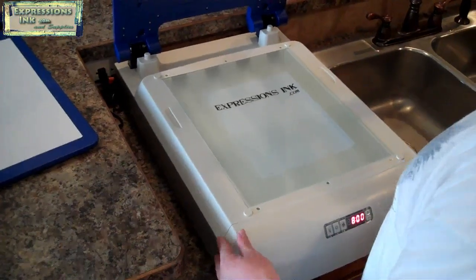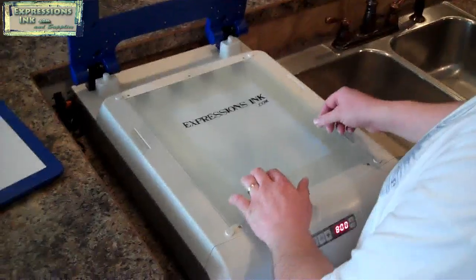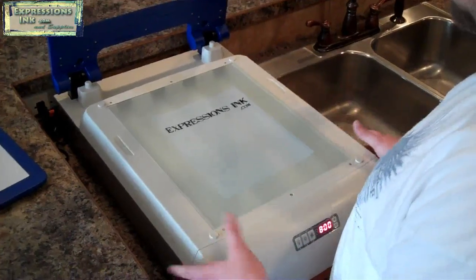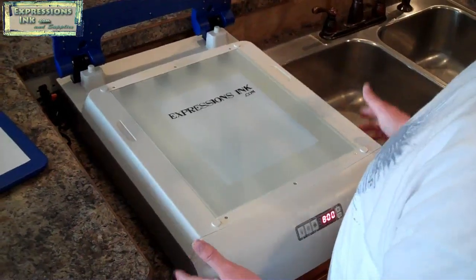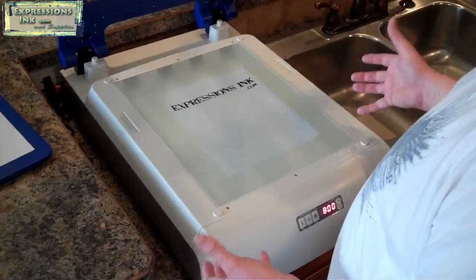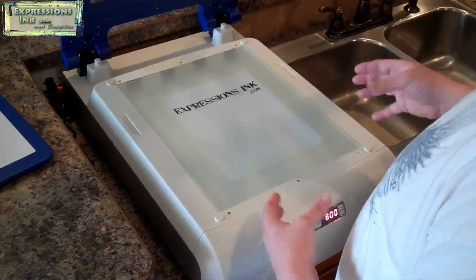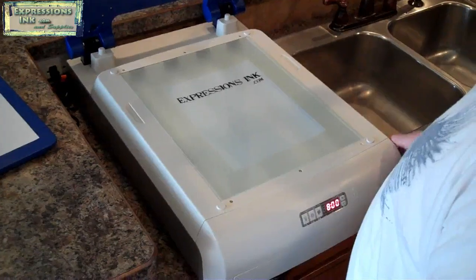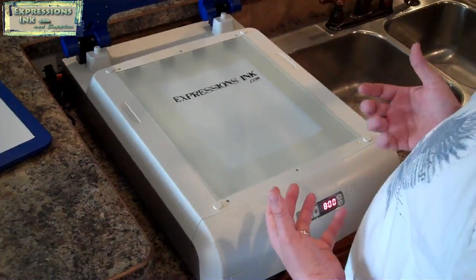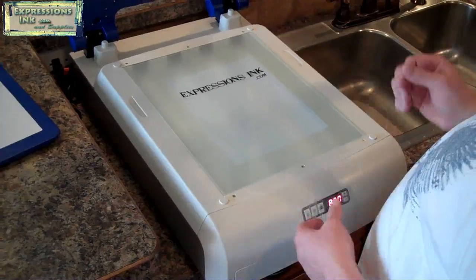Now we're going to show you how to burn the image into your screen. We've got a transparency that we've printed on an inkjet printer. It's best to use just a black line design so that your printing is straight black. That's going to block the light out the best and give you a nice defined line.